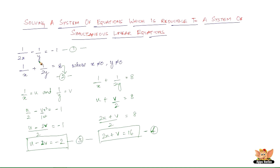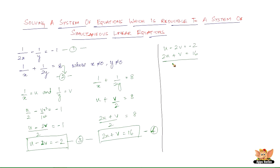So now we have two equations to solve: equation 3 is u minus 2v equals minus 2, and equation 4 is 2u plus v equals 16. We will solve this by the method of elimination by equating coefficients. Let us try to eliminate v.